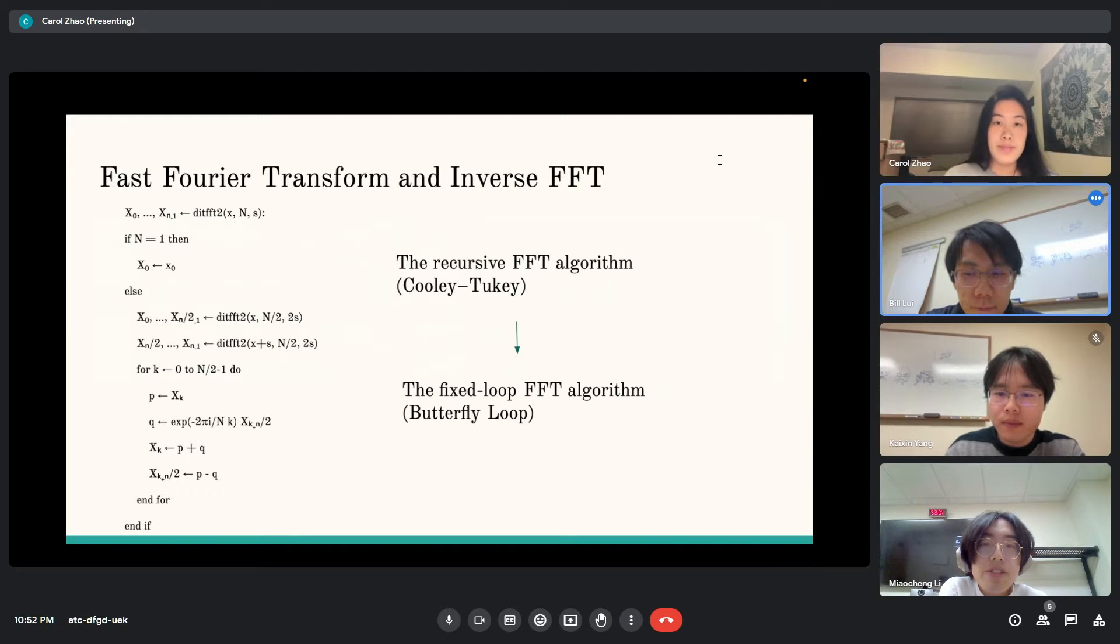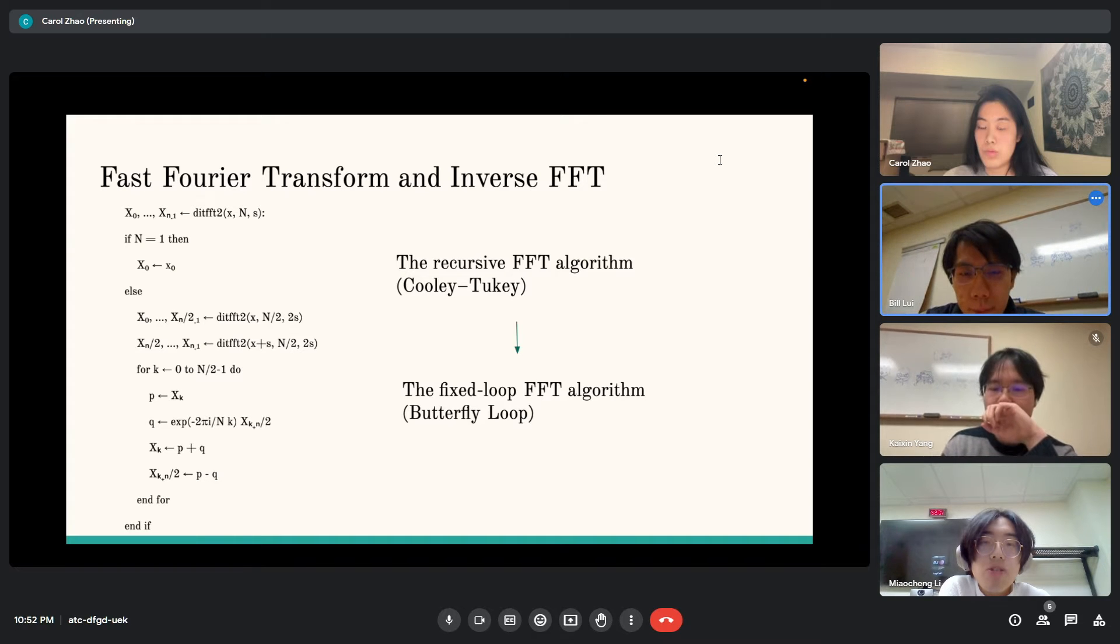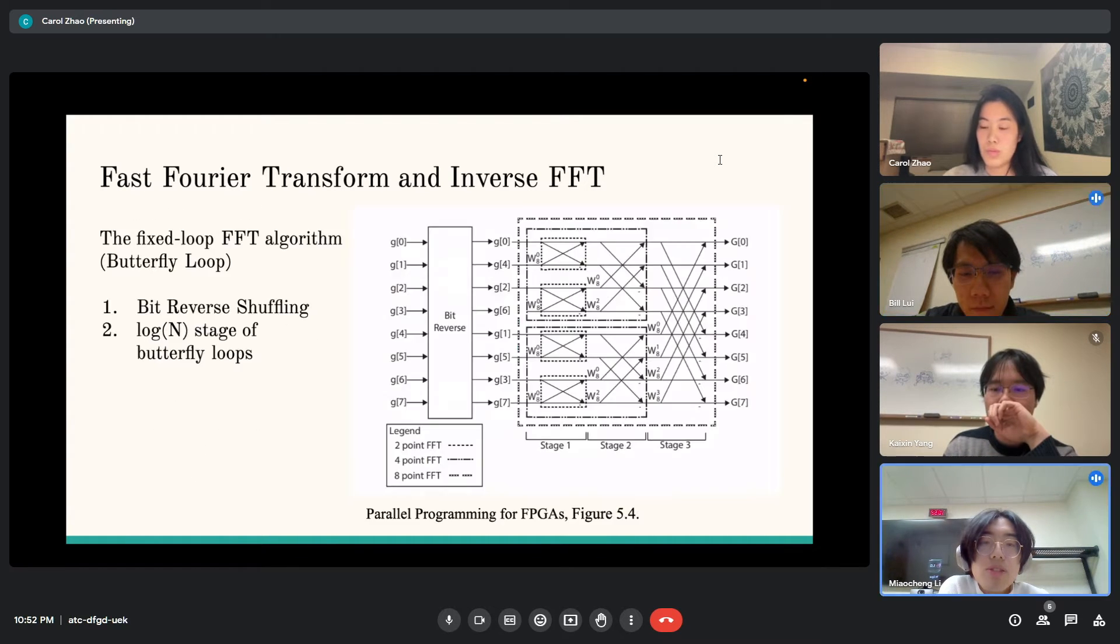FFT is the compute primitive for this project, which is able to decompose time-domain signals into frequency components. Our implementation is similar to the Cooley-Tukey recursive FFT, but we use the Pease algorithm. As you can see, there are two steps. The first is the bit-reverse shuffling stage where the input array is shuffled according to the bit-reversed indexing.